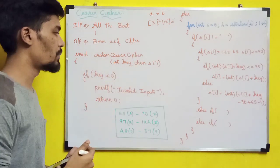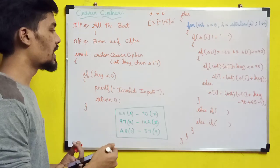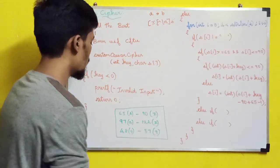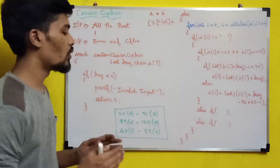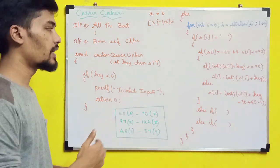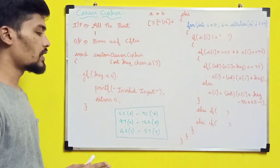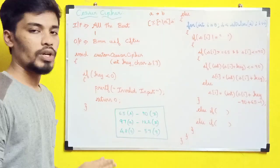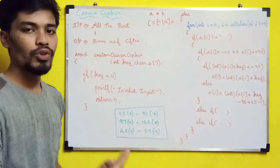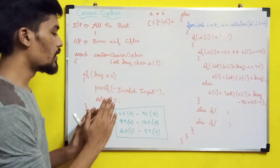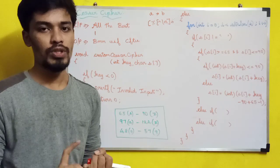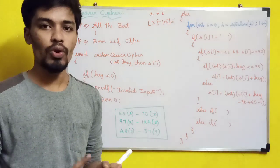So the function is called custom_caesar_cipher. We pass int key and one character array. The first condition we handle is invalid input: if the key is less than 0 or greater than 25, we print 'invalid input'. This is a unique case. Then we consider the alphabets — they have uppercase and lowercase letters.